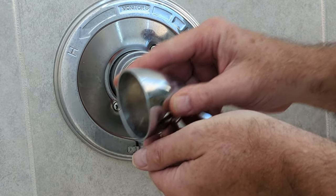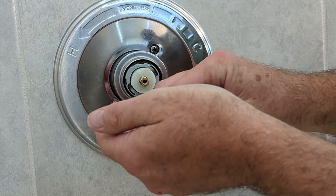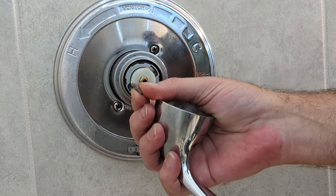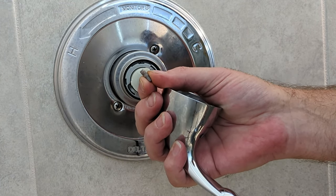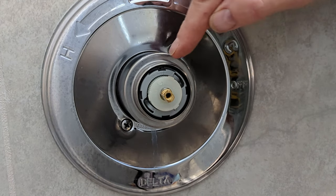Now the reason for the towel is this. That set screw comes out, so we need to be really careful with that. If we drop it, it may take a couple bounces and go down the drain, which is what we don't want.